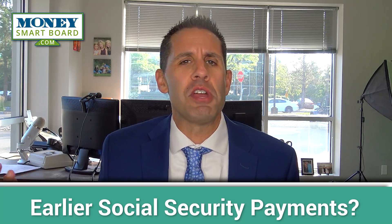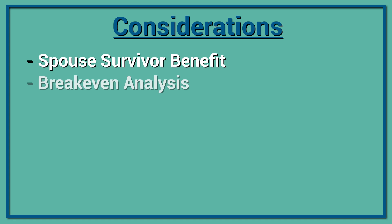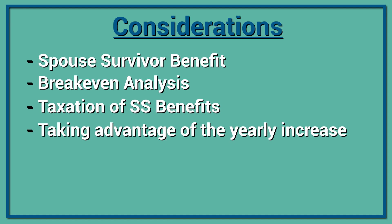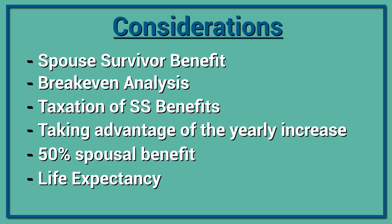After hearing all this, some people ask: why wouldn't everyone just turn on their Social Security early? If you can get it earlier and if you make a little more, they essentially give it back to you later on. But there are other considerations besides this earned income penalty: the impact on survivor benefits for your spouse, the break-even analysis of turning it on early at a lower amount versus waiting for a higher amount, how Social Security benefits are taxed, the automatic annual increase if you wait, the 50% spousal benefit, and your life expectancy. I have another article and video in the description below covering those other factors.